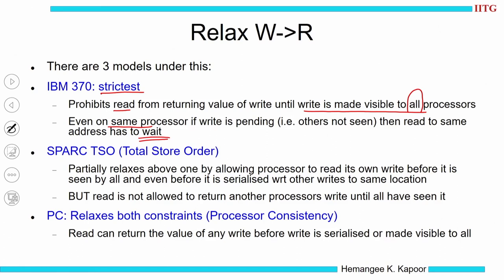IBM 370 is the strictest in terms of write atomicity. The SPARC TSO — Total Store Order — is slightly more relaxed. It says you can read your own write early, before it is seen by others, even before it gets serialized. But it says do not read others' value early — the read is not allowed to return another processor's value until all in the system have seen it. PC is the most relaxed: you can read can return a value of any write before the write is serialized or made visible to all — you can read your own writes as well as others' writes early.